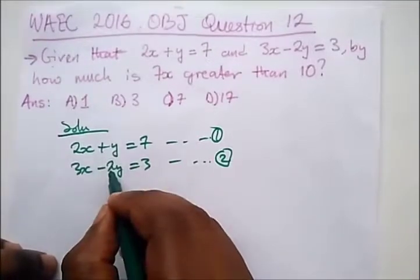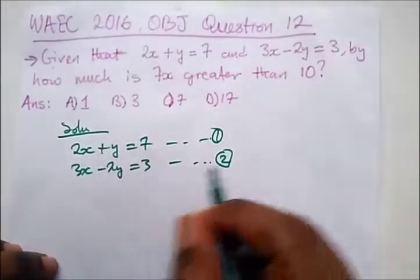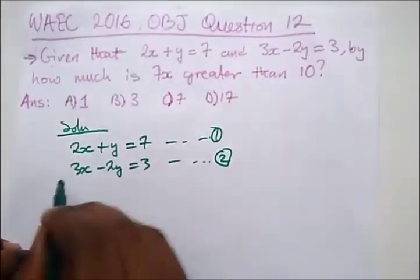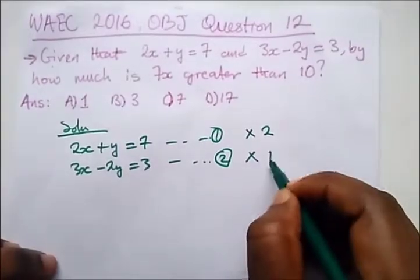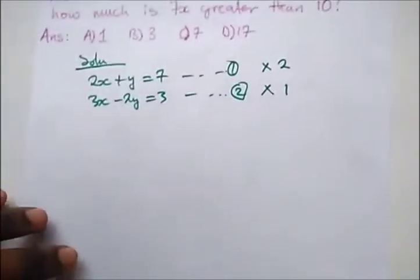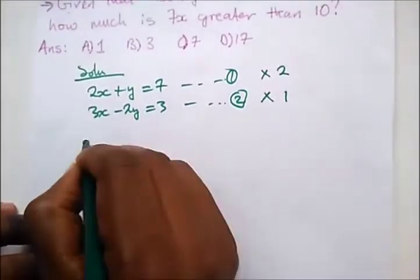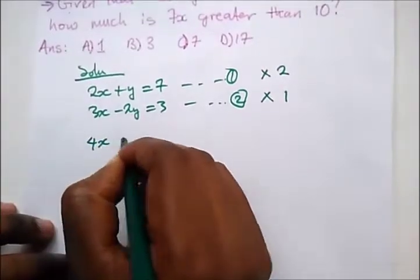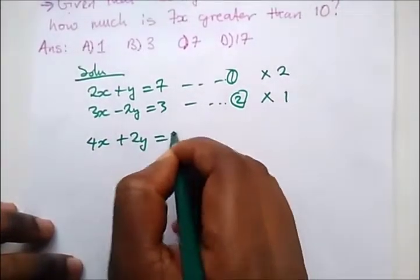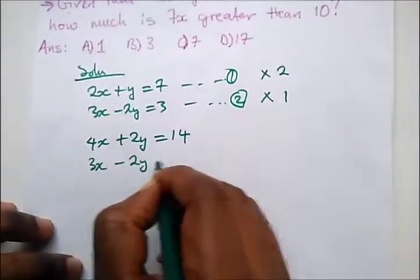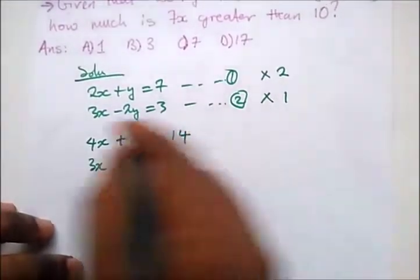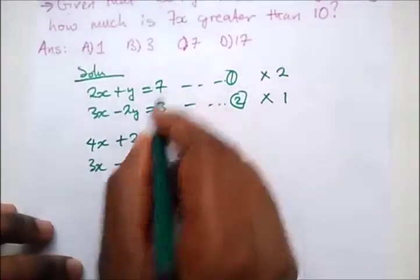We have to make the coefficient 2 here and 2 also here. They have to have the same coefficient. So what do we do? We multiply equation 1 by 2 and multiply equation 2 by 1. And we have here 4x plus 2y equals 14 and 3x minus 2y equals 3. That's 1 multiplying everything here and 2 multiplying everything in this equation.